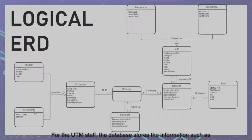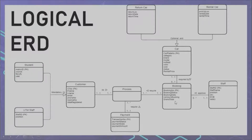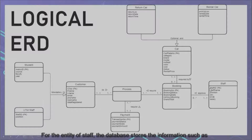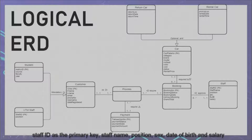For UTM staff, the database stores staff ID as the primary key and position. For the entity of booking, the database stores booking number as the primary key, payment status, booking status, booking date, number of hours for booking, and grand total. For the entity of staff, the database stores staff ID as the primary key, staff name, position, sex, date of birth, and salary.